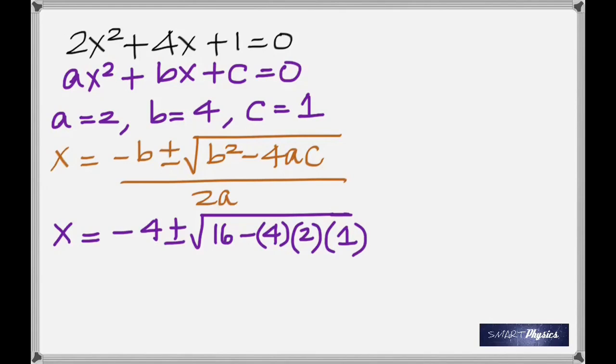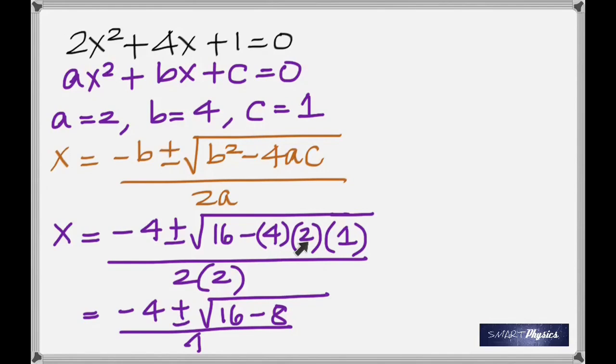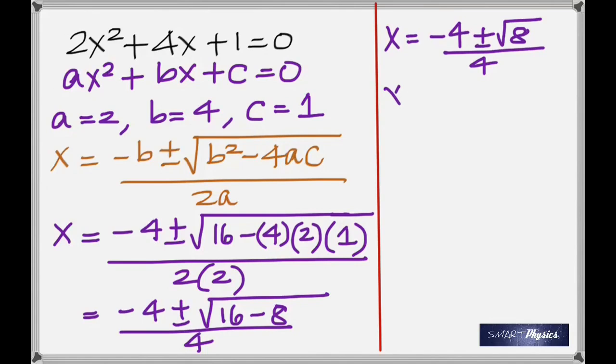So minus 4 plus or minus square root of 16, and this term becomes 8 because it's 4 times 2, divided by 4. So now minus 4 plus or minus square root of 8 divided by 4.